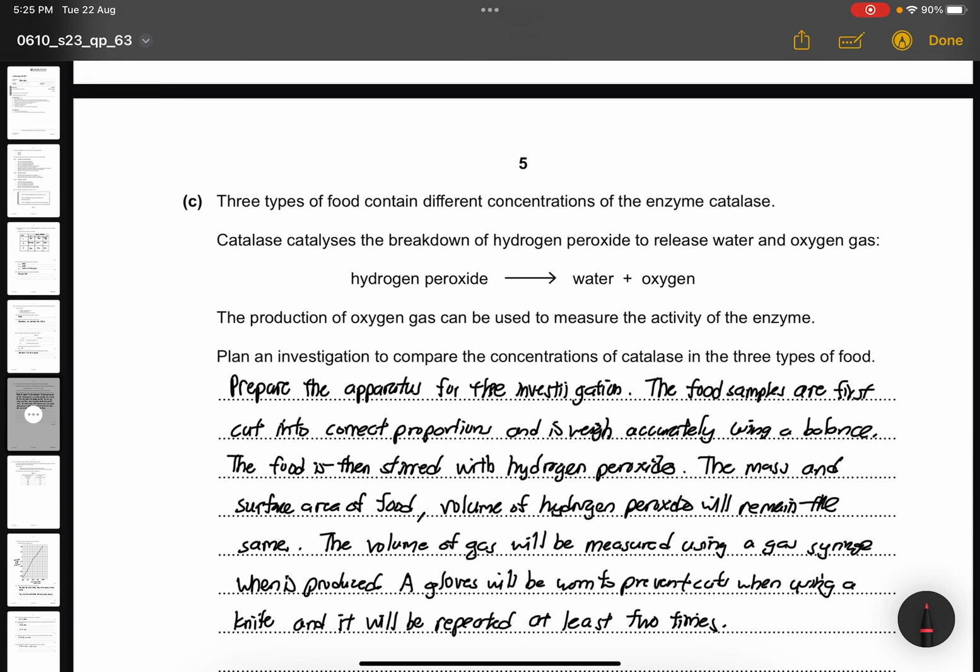Part C. The 3 types of food contain different concentrations of the enzyme catalase. Catalase catalyzes the breakdown of hydrogen peroxide to release water and oxygen gas. The production of oxygen gas can be used to measure the activity of the enzyme. Plan an investigation to compare the concentration of catalase in the 3 types of food. Prepare the apparatus for the investigation. The food samples are first cut into correct proportion and weighed accurately using a balance. The food is then mixed along with hydrogen peroxide. The mass, the surface area of the food, the volume and the concentration of hydrogen peroxide will remain the same. The volume of gas will be measured using a gas syringe when it's produced. Safety gloves will be required to be worn to prevent cuts when using a knife during the cutting of the food samples. And the whole process should be repeated at least 2 times for more accurate results.